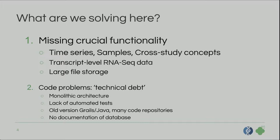On the code side, there are a few things I want to highlight. We have a kind of monolithic architecture where we have the back-end and the front-end integrated, which makes it harder to maintain. We don't have a lot of automated tests, so it's harder to check whether something broke. We're on an old version of Grails and Java. We have a lot of code repositories, which makes it hard to get into development. And the database has no documentation — people from Rancho were stressing this quite strongly — which is really necessary to have good ETL tools.